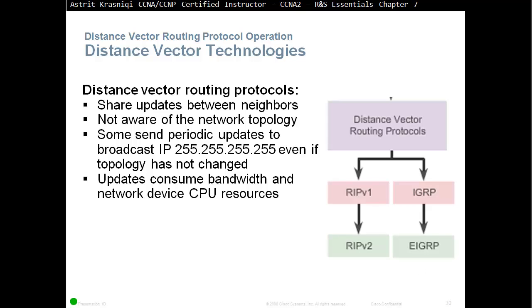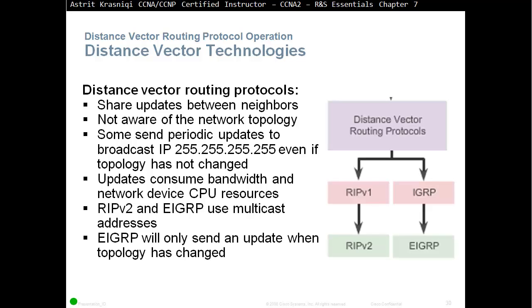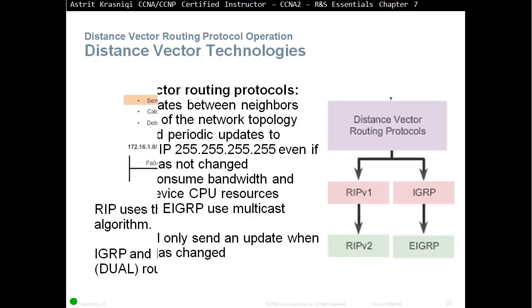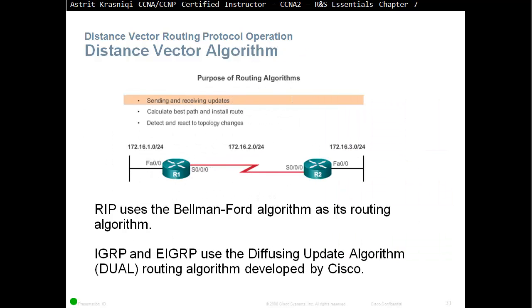Updates consume bandwidth and network device CPU resources. RIPv2 and EIGRP use a multicast address for these updates. EIGRP will only send an update when the topology has changed — it's like a triggered update. The algorithm RIPv1 uses is called Bellman-Ford, while EIGRP and IGRP use a Cisco-developed algorithm called the Diffusing Update Algorithm, or DUAL for short.